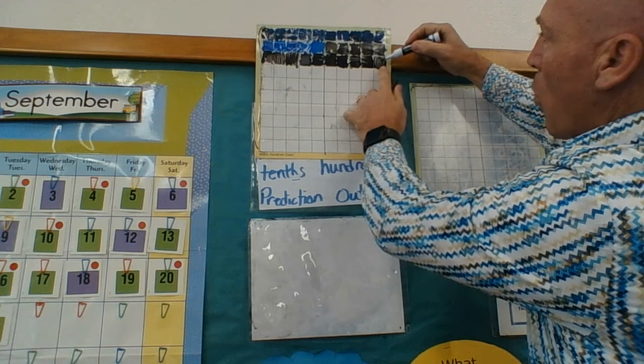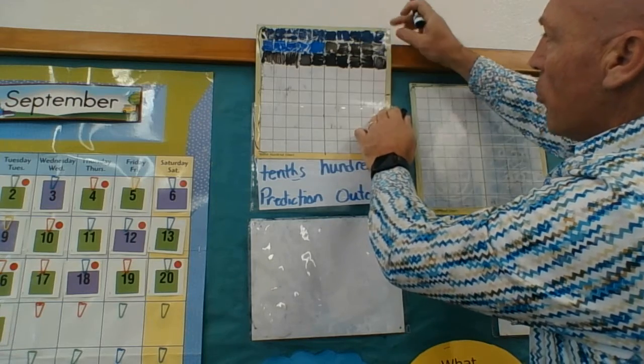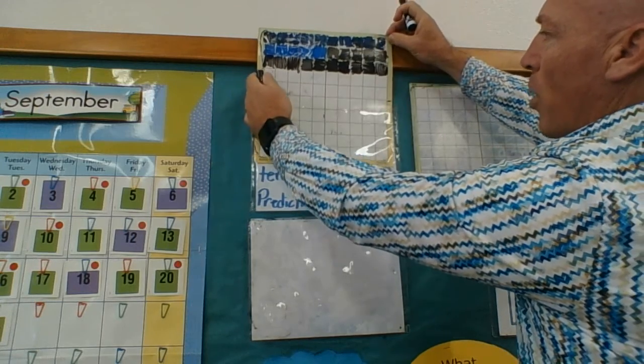And so if I'm adding 1 hundredth to 29 hundredths, I'm getting 30 hundredths.